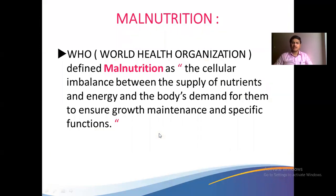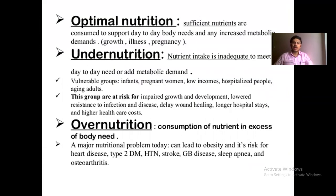Now coming to malnutrition. Malnutrition is defined as a cellular imbalance between the supply of nutrients and energy and the body's needs for growth, maintenance, and specific functions. Don't think malnourished always means a lean or thin person — an overweight person is also malnourished. Both undernourished and overnourished are described as malnourished. A person taking excess carbohydrate or fat may become obese and develop chronic diseases like diabetes, hypertension, cardiovascular disease, gastrointestinal disease, sleep apnea, polycystic ovary syndrome, and osteoarthritis. We have to reach optimal nutrition.